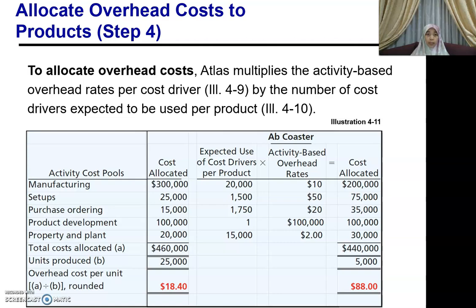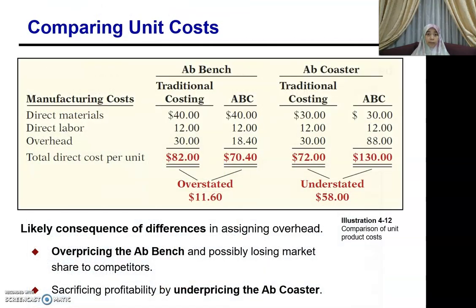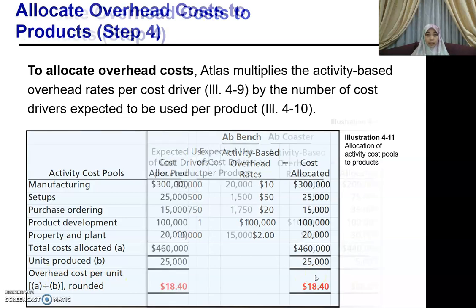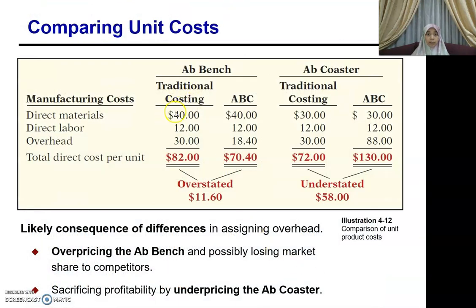Now compare with the traditional method already worked out previously. For AppBench using traditional costing, the total direct cost per unit is RM82. Under ABC, the overhead for AppBench is RM18.40 per unit. The direct material and direct labor remain the same whether using traditional or ABC — the difference lies only in the overhead treatment.